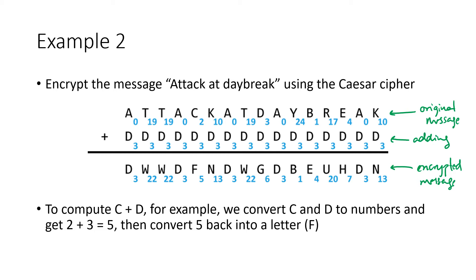We're computing these letters using the same letter arithmetic as before. For example, to encrypt the letter T: we replace T by 19, add 3, get 22, which we replace by the letter W. Sometimes if we go over we wrap around. To encrypt the letter Y: 24 plus 3 is 27, but in modular arithmetic we subtract 26 to get 1, so Y gets encrypted as B.